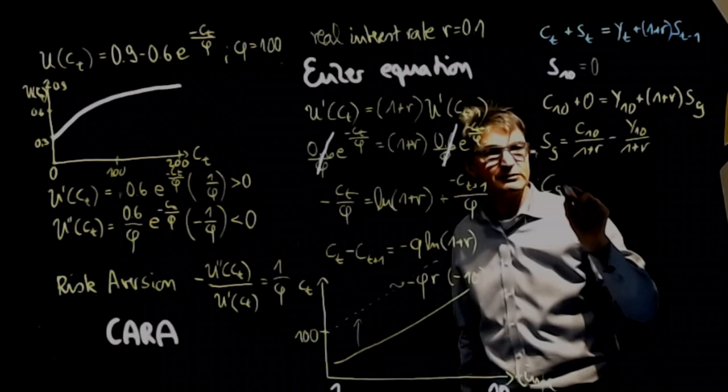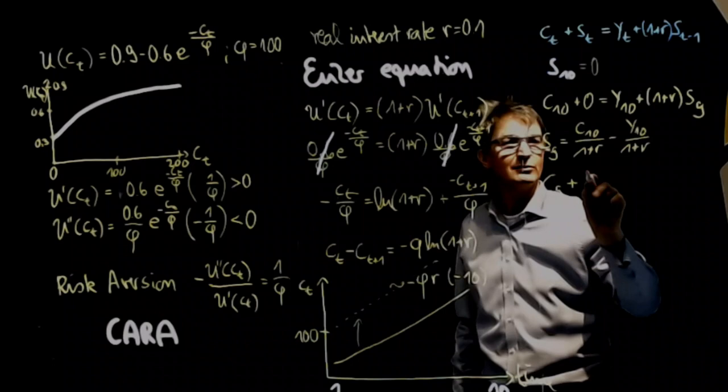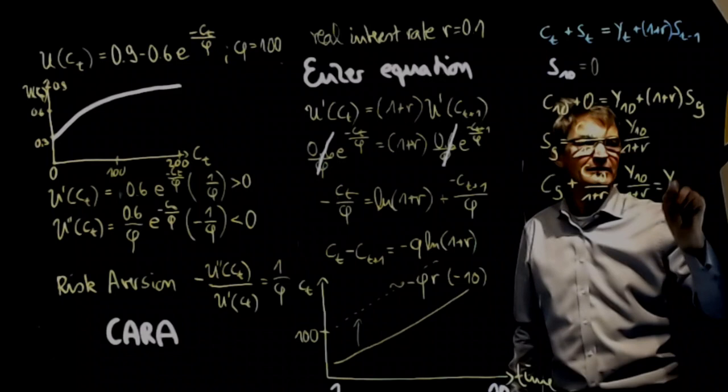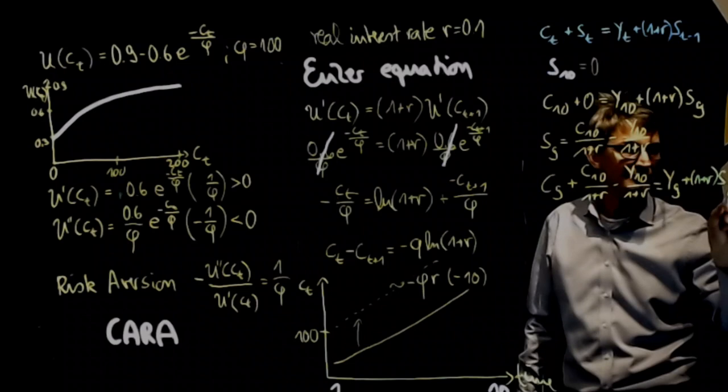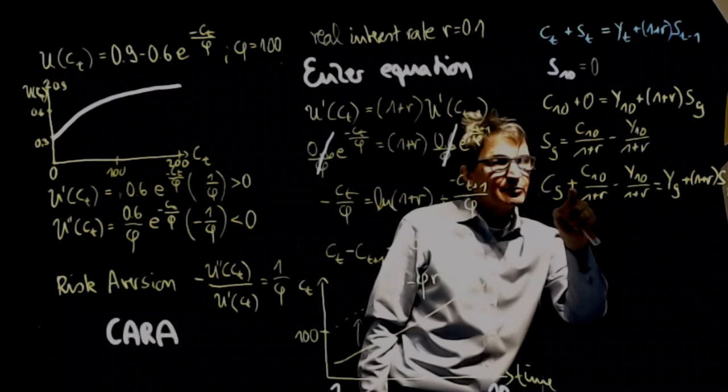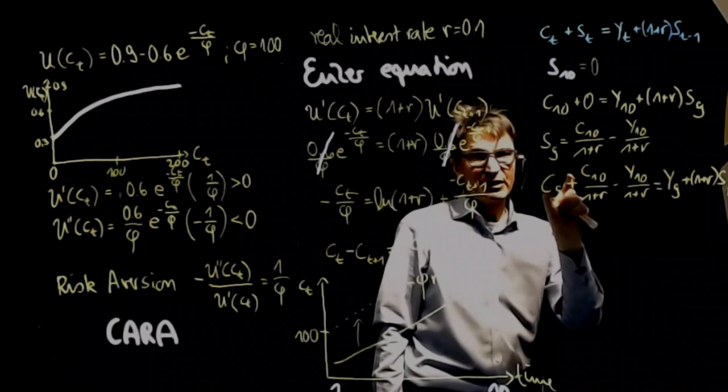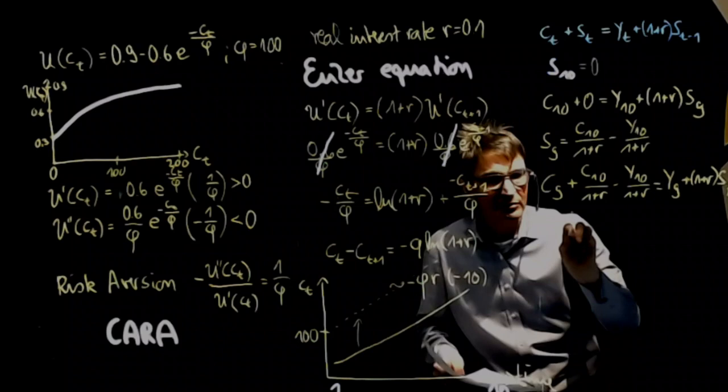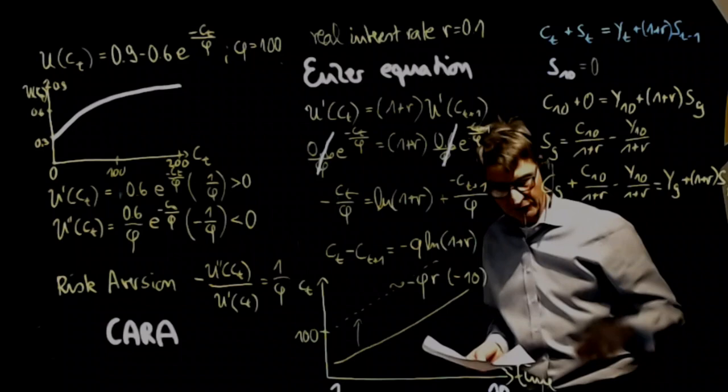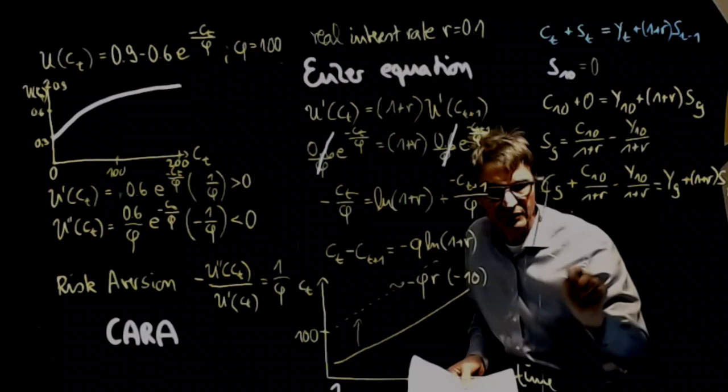C_9 plus S_9, which is C_10 over 1 plus R minus Y_10 over 1 plus R, must be equal to Y_9 plus 1 over R times S_9. And now again, we would divide by 1 plus R to obtain an expression for S_8. And you see that the 1 plus R in the denominator is then depicted to the power of 2. And we'd continue by backward induction, by going through all these restrictions, to then observe that this 1 plus R obtains higher power across time.